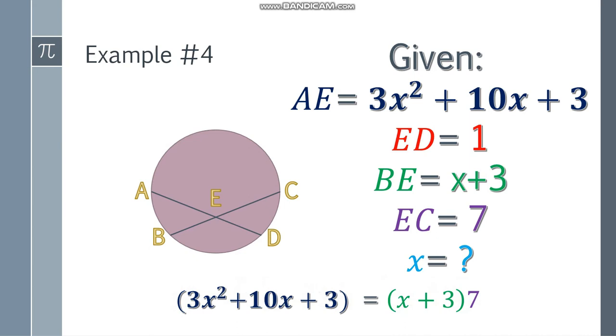And I'm not distributing this one just in case that the factors of the left side of the equation is a factor of like X + 3. So we can cancel it later. So what we're going to do is factor 3X² + 10X + 3.